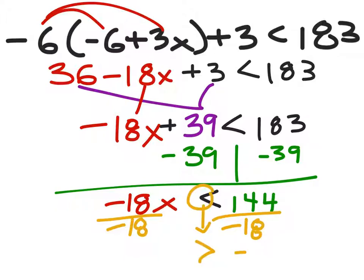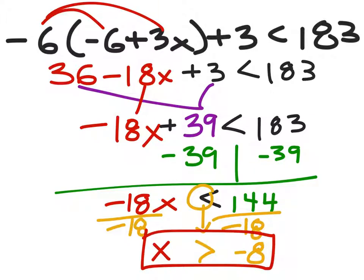Dividing both sides by negative 18 — since we're dividing by a negative, the inequality flips from less than to greater than. So x is greater than negative 8. Be careful: on the test you'll want to check your work and test values greater than negative 8 to make sure they give a true statement.